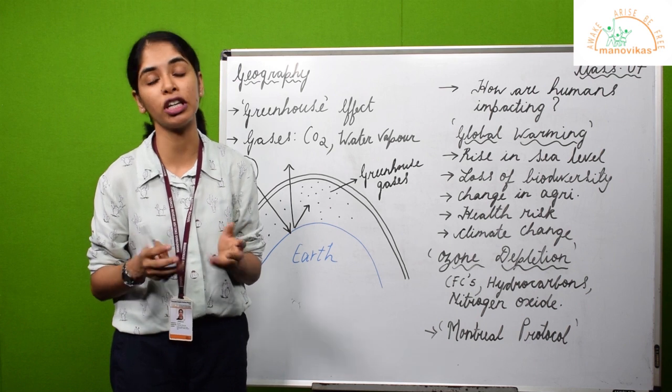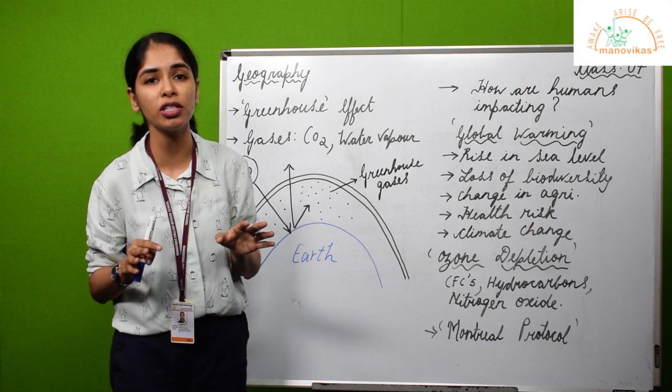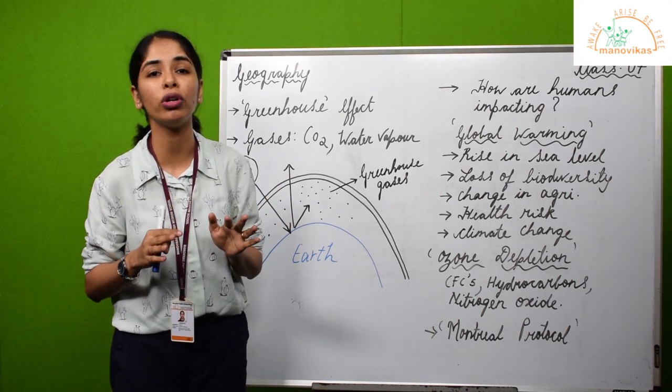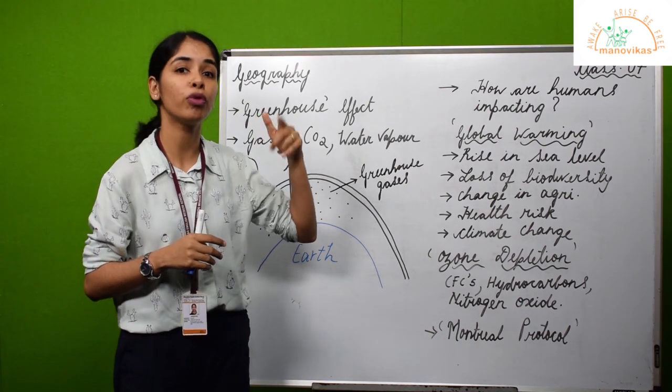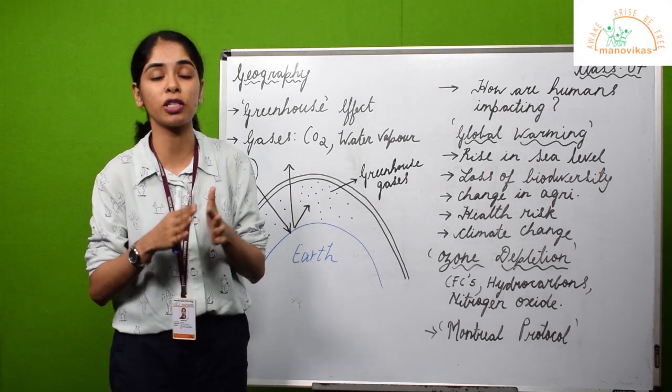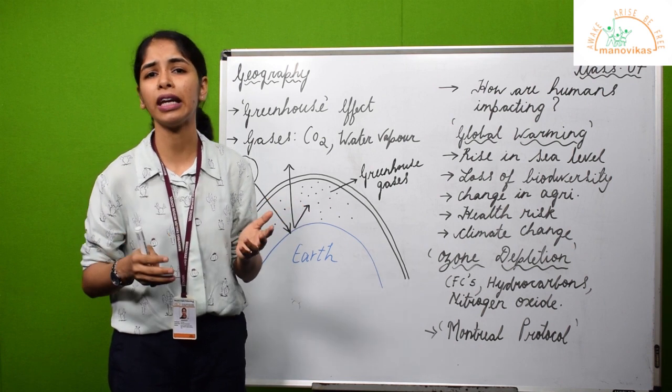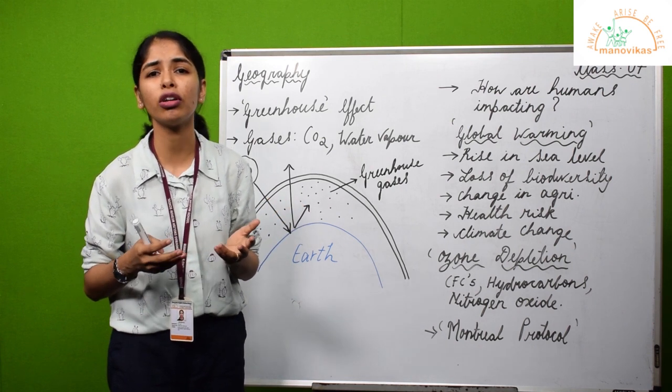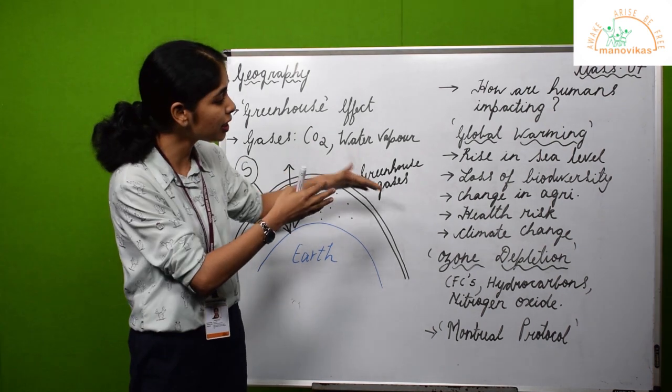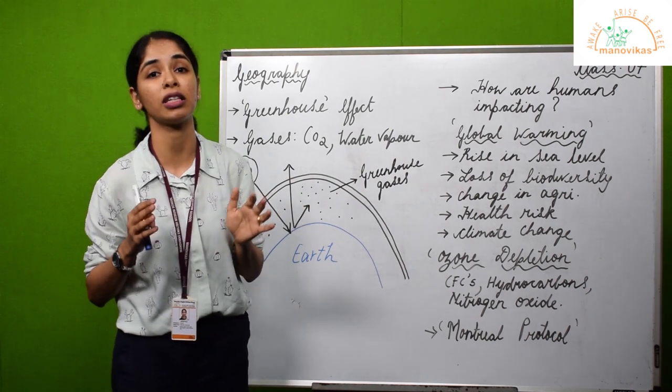In addition to this, there are possible health risks. A very good example would be the breeding of mosquitoes. Mosquitoes largely survive in warmer, hotter climatic conditions and can hardly survive in colder regions. As temperatures soar high overall, mosquitoes will expand their territories and spread diseases like dengue, yellow fever, chikungunya, and malaria.